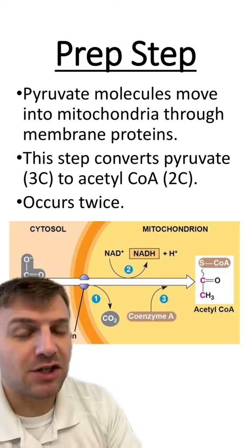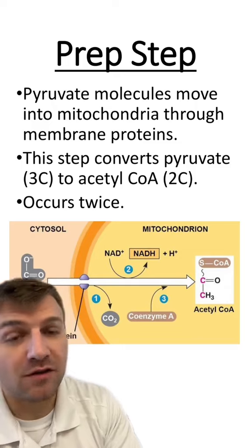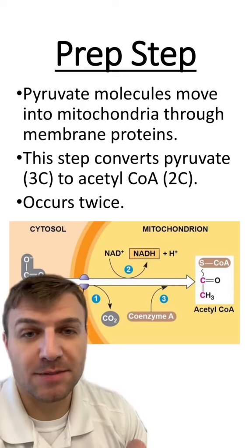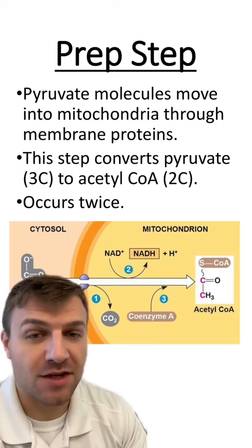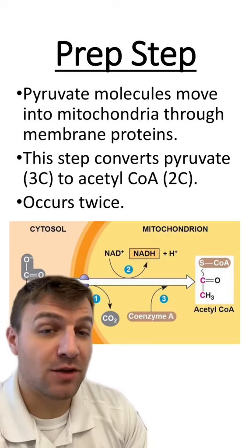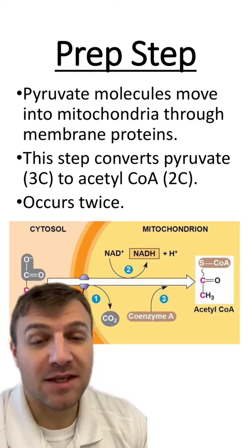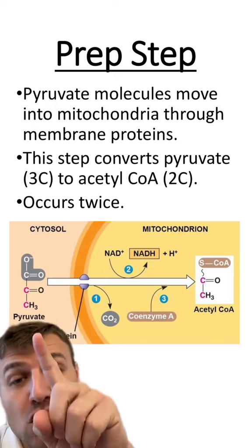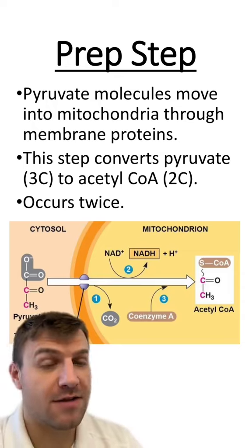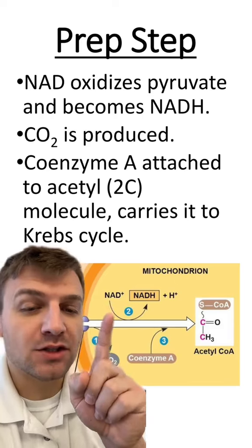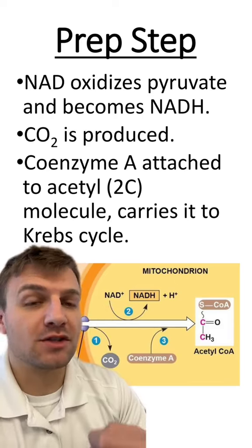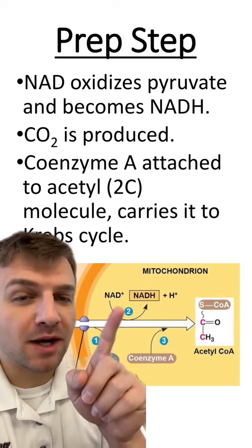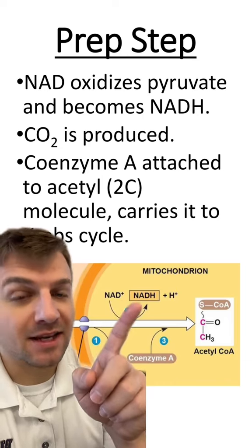There's a specific reaction that occurs that changes pyruvate into acetyl-CoA. This reaction occurs twice because we have two pyruvate molecules from glycolysis. One NAD molecule is going to oxidize pyruvate, taking away one of its electrons, and when NAD takes this electron it also binds with a hydrogen ion to form NADH.